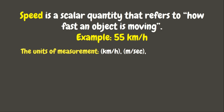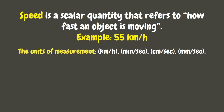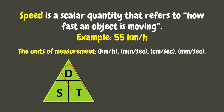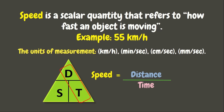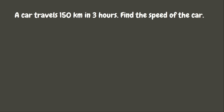The units of measurement for speed are kilometer per hour, meter per second, centimeter per second, or millimeter per second. Now, to solve for speed, we just simply need to divide the distance by the time. Now, let's try to solve our problem. Again, to solve for the speed, we are just simply going to divide distance by the time.